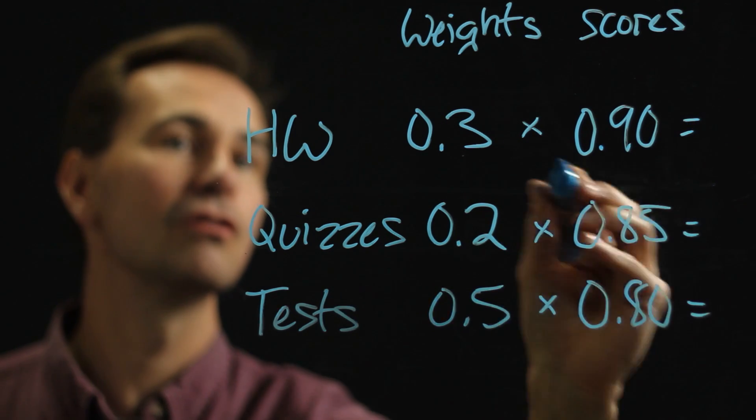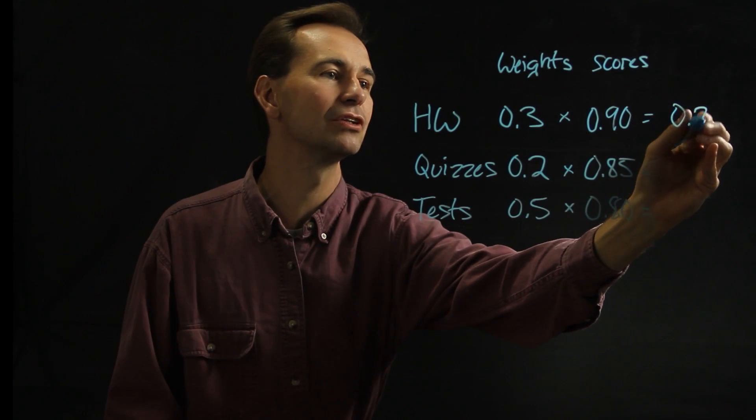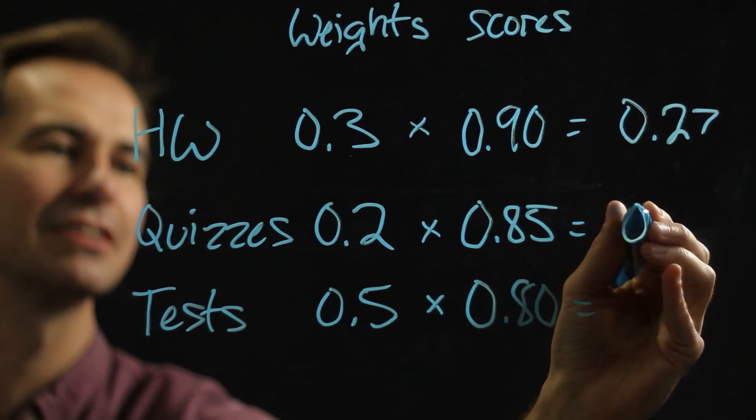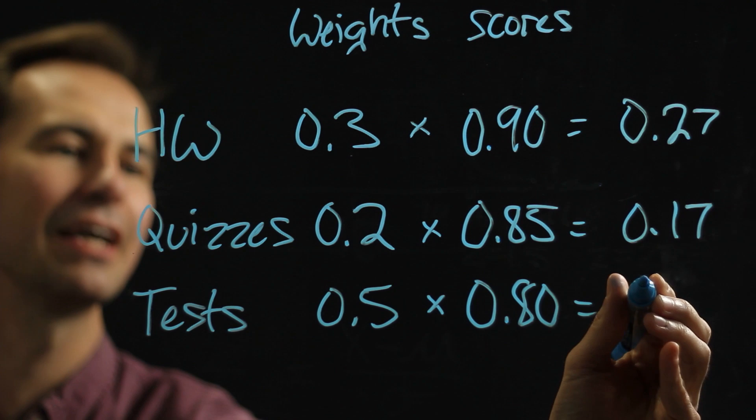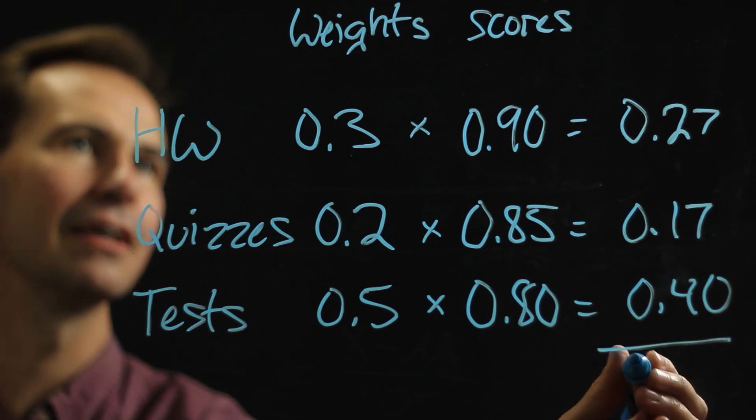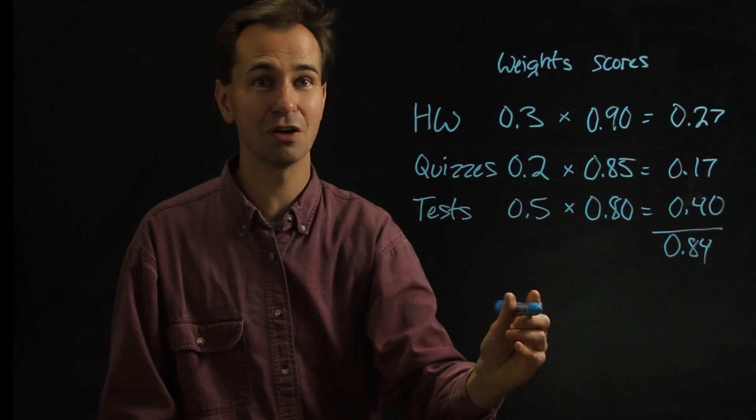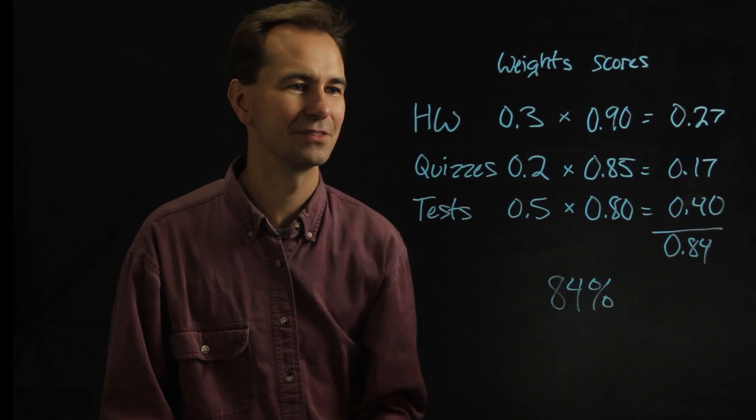So for the homework, 0.3 times 0.9 is 0.27. For quizzes, 0.2 times 0.85 is 0.17. And then tests, 0.5 times 0.8 is 0.40. And then you add all those together and you get 0.84. So that means your overall score for the class would be 84%. So nothing to it.